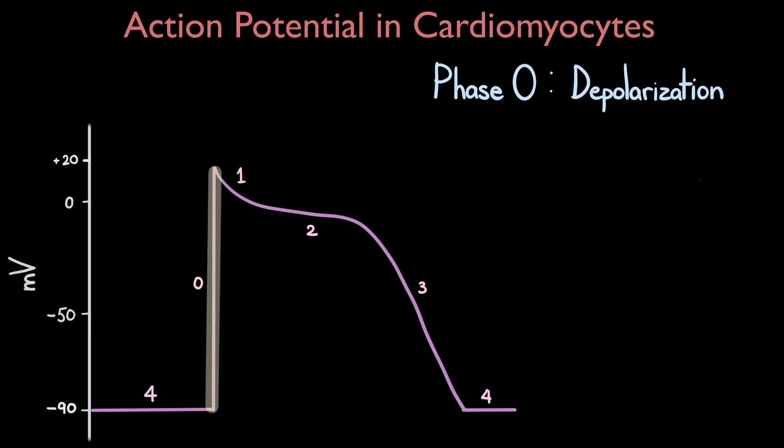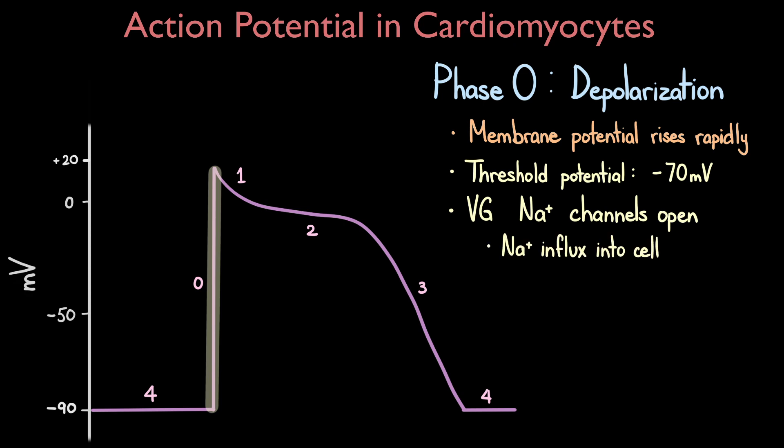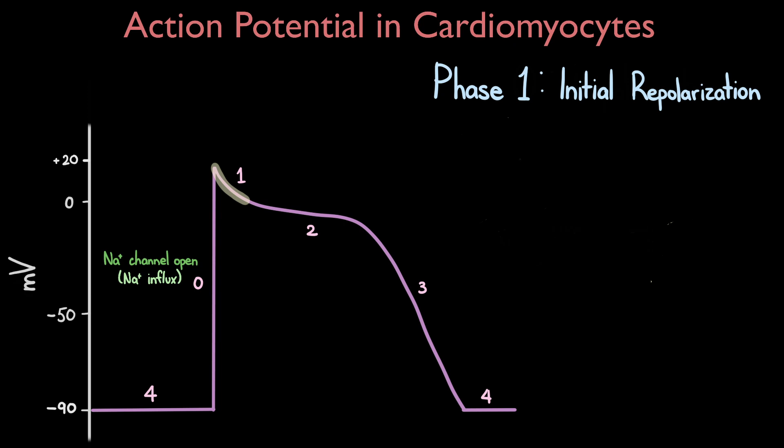Phase zero is also called the depolarization phase. During this phase the membrane potential increases very quickly. The action potential from adjacent cells propagates and causes the membrane potential to rise above minus 90 millivolts. When the cardiomyocyte's membrane potential reaches the threshold potential of approximately minus 70 millivolts, voltage-gated sodium channels open to allow sodium to rapidly rush into the cell and generate an action potential. If the membrane potential does not reach minus 70 millivolts, an action potential will not be generated.